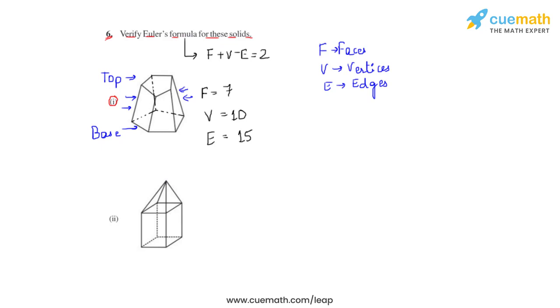So if we consider the left hand side of Euler's equation and substitute these values, let us see what we are going to get. The left hand side of Euler's equation is F plus V minus E. And if we substitute the values here, we have 7 plus 10 minus 15. And if we solve this, we'll be getting 2, which is the right hand side of Euler's equation.